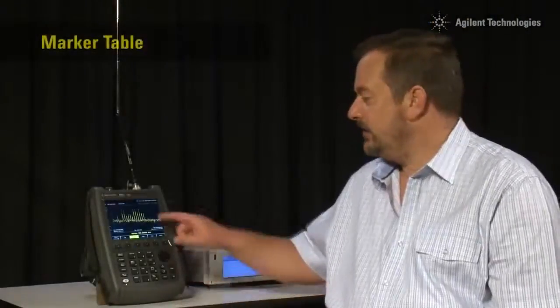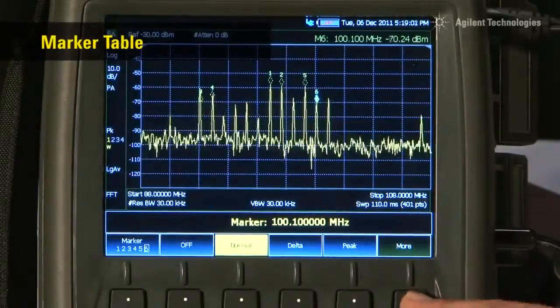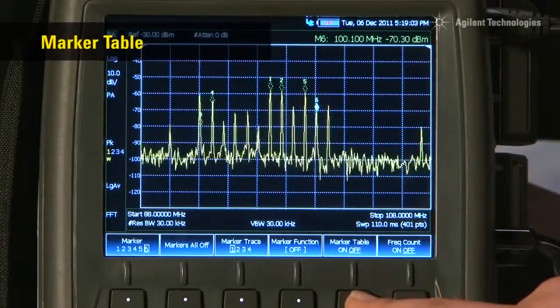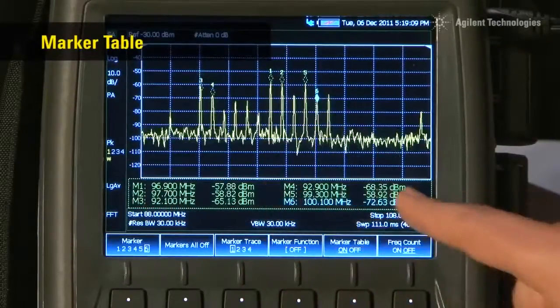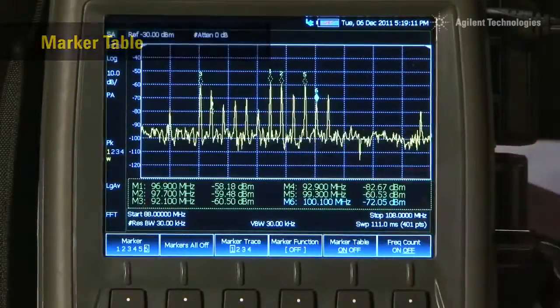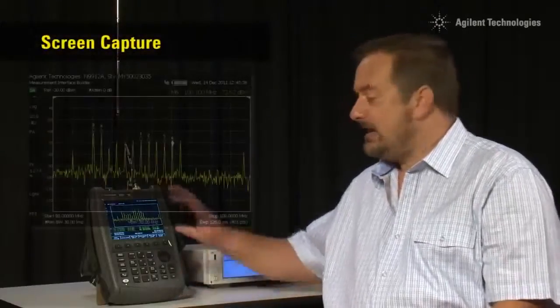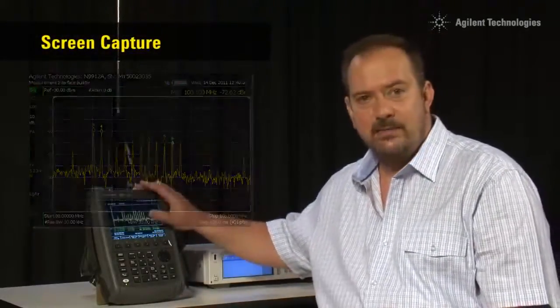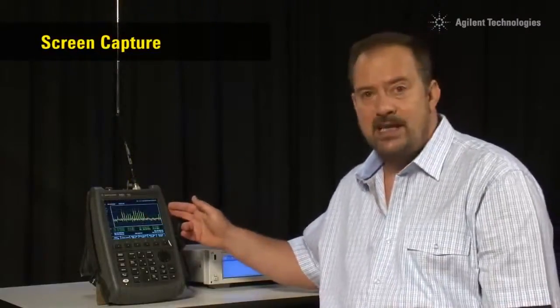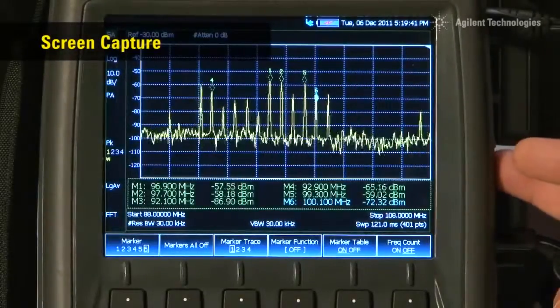And here you can see I have turned on all six markers, and if I press the More button, we can now turn on the marker table, which shows the frequency and amplitude levels of all six markers simultaneously. We can now capture that screen and save it as a JPEG file, either to the internal memory, to a USB memory stick, or the Mini SD card.